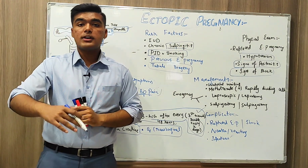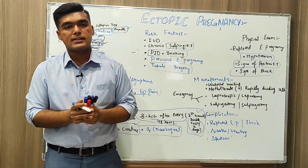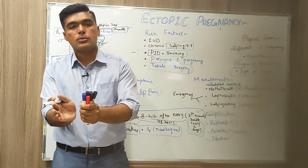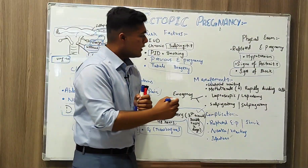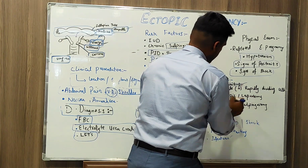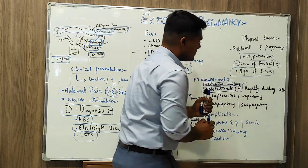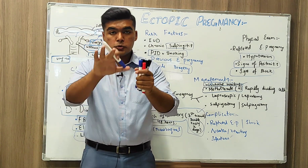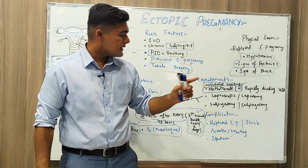Now we will move towards the management of ectopic pregnancy. Management is based on whether the patient is symptomatic or asymptomatic and the location of the ectopic pregnancy. Watchful waiting is appropriate in asymptomatic cases. If symptoms occur, methotrexate is used — it suppresses rapidly dividing cells, making it very important in this management.